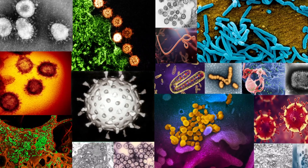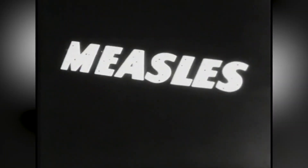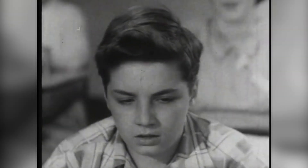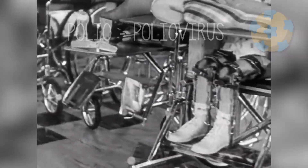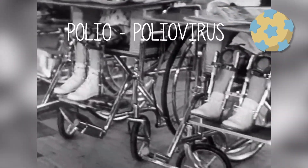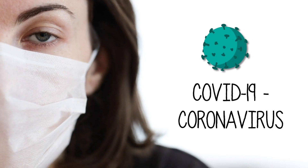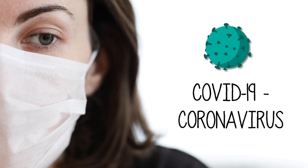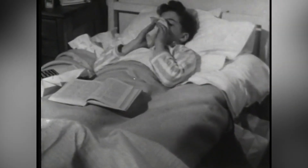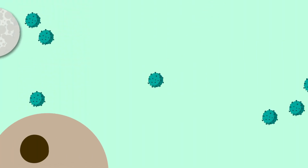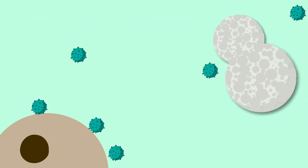Viruses come in all shapes and sizes, and the problems they can cause are equally diverse. From the sore throat and runny nose of the common cold, to the paralysis of polio, and the potentially fatal breathing problems and fevers of the coronavirus. But what is it about these tiny little things that can make us so sick? It turns out, it's a tale of hijack and war on a microscopic scale.